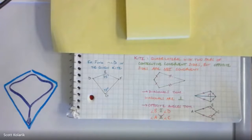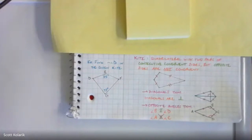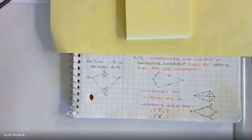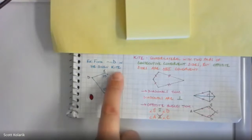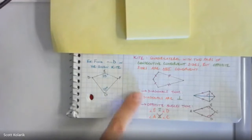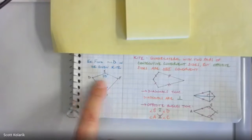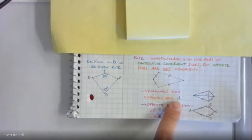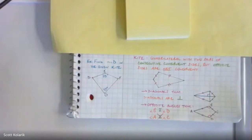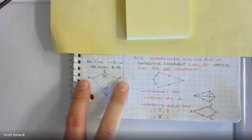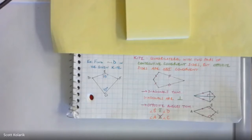So for the Opposite Angles Theorem, the wings or arms of the kite are what will be congruent to each other. Now, how will we see kites expressed in problems? In the example shown, we're given the shape of a kite and told explicitly it's a kite, so both theorems apply. No diagonals are drawn, but if they were, they'd have to be perpendicular.